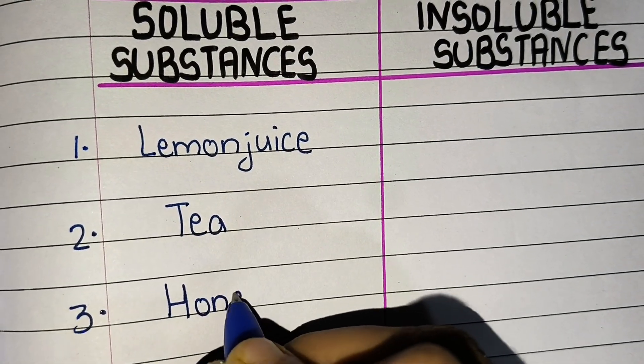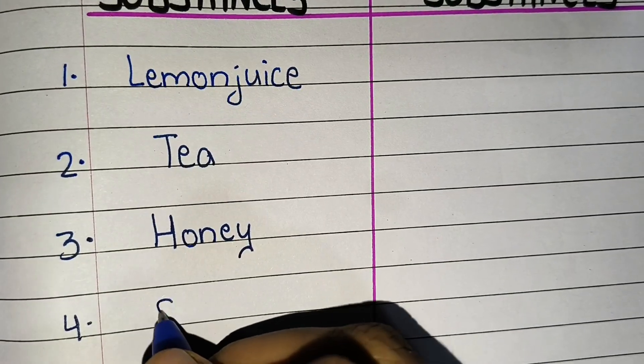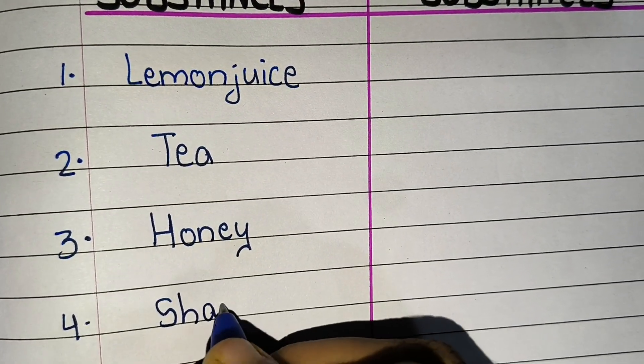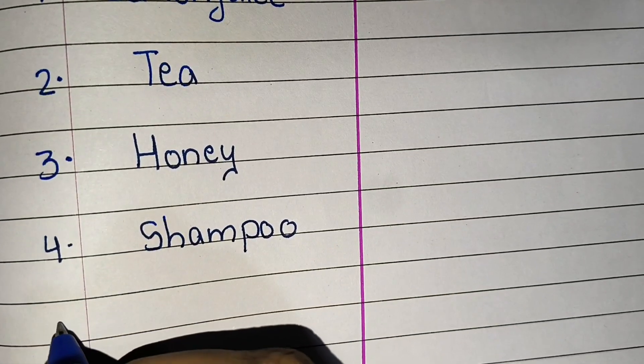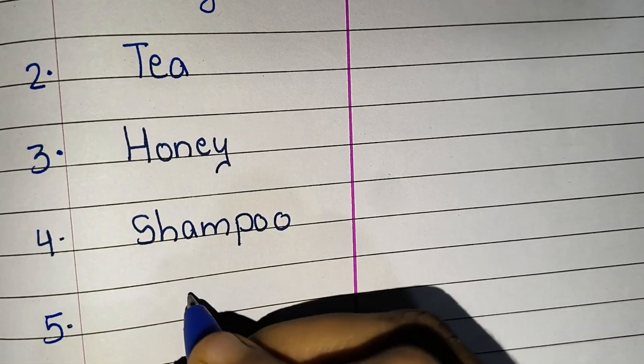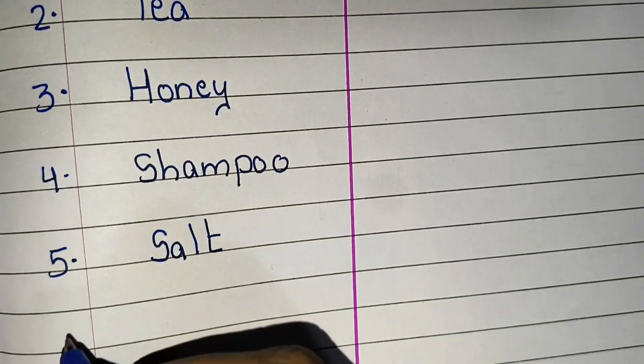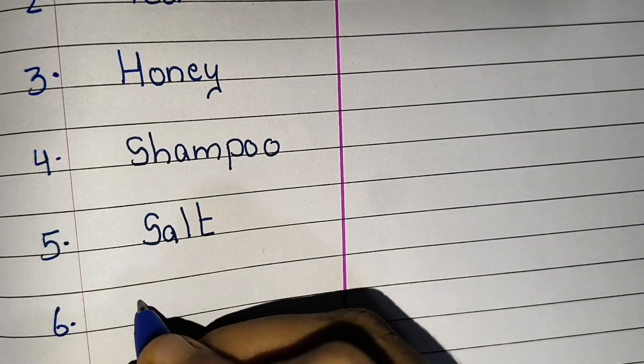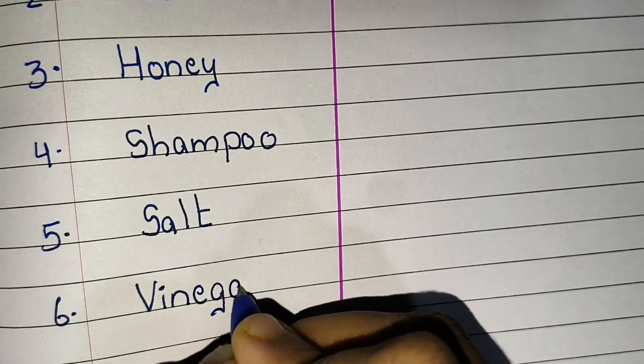Examples of soluble substances which dissolve in water: lemon juice, tea, honey, shampoo, salt, and vinegar. Now let's start with insoluble substances.